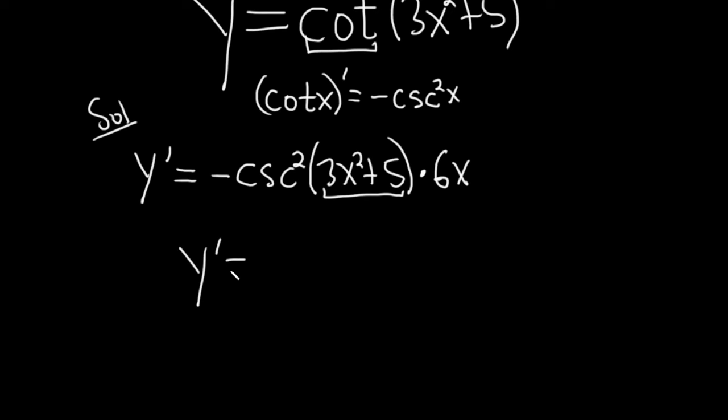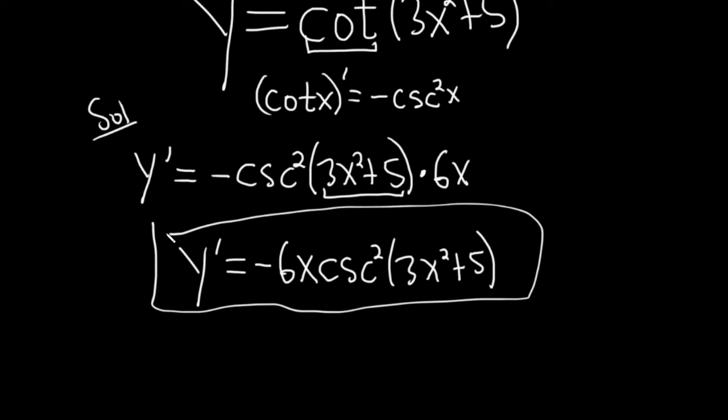So y prime equals negative 6x cosecant squared of 3x squared plus 5. That would be the derivative of this function. I hope this has been helpful. Good luck.